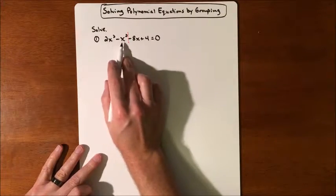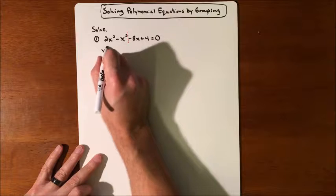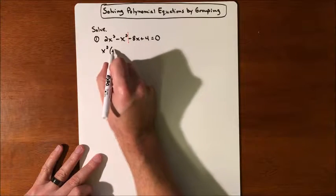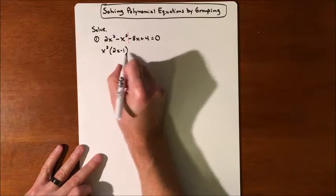So what do these have in common that we can factor out? We can factor out an x squared. We'll be left with a 2x minus 1.